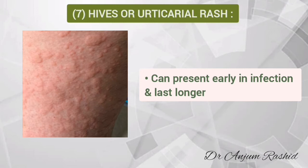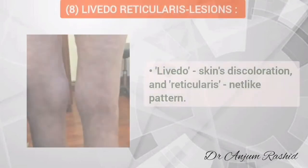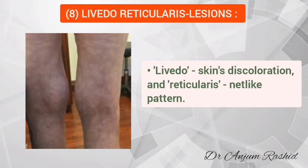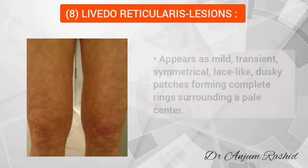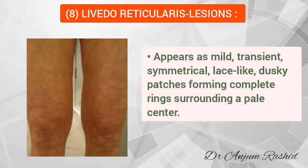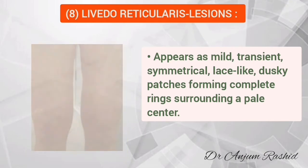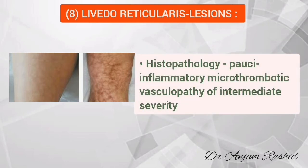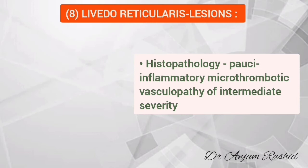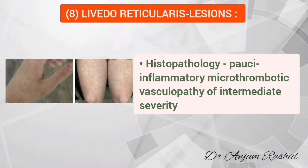Another rash reported in COVID patients is livedo reticularis. Livedo refers to skin discoloration and reticularis means a net-like pattern. This rash appears as a mild, transient, symmetrical lace-like dusky patches forming complete rings surrounding a pale center. On histopathology there is post-inflammatory microthrombotic vasculopathy of intermediate severity. Livedo reticularis is usually found in the lower limbs.